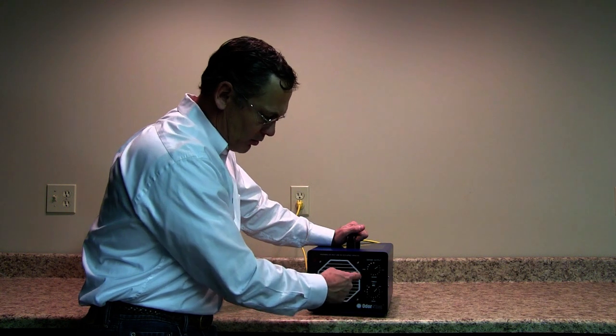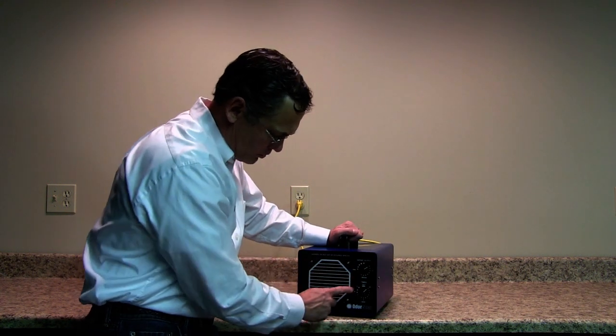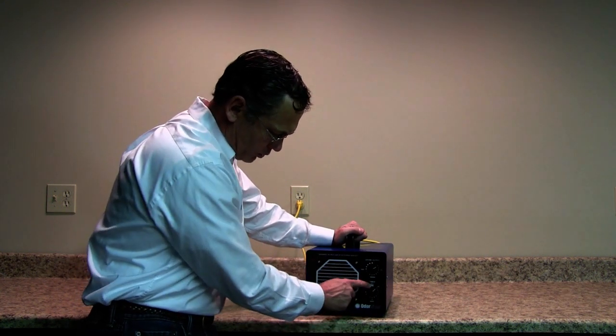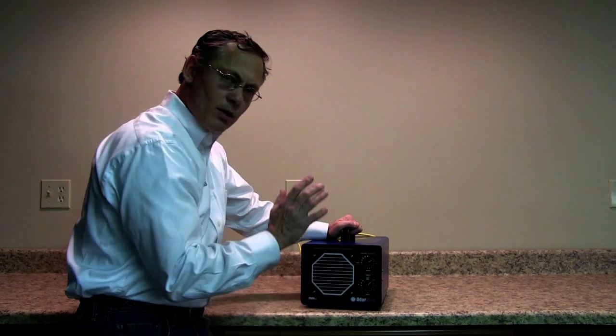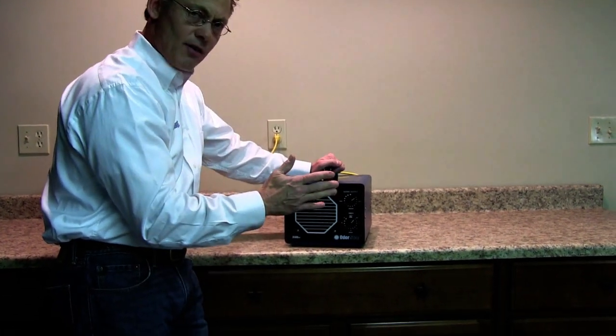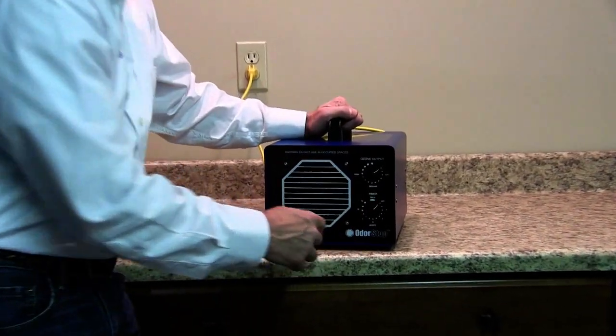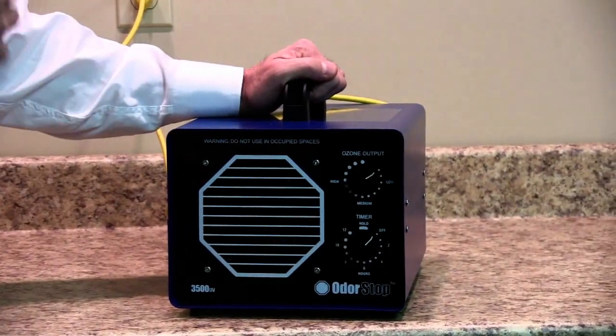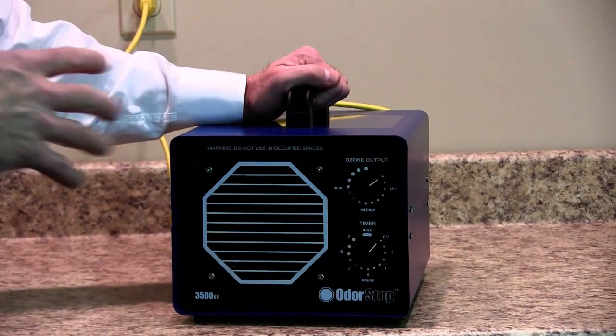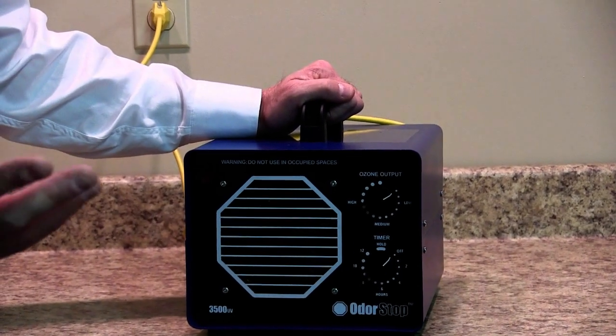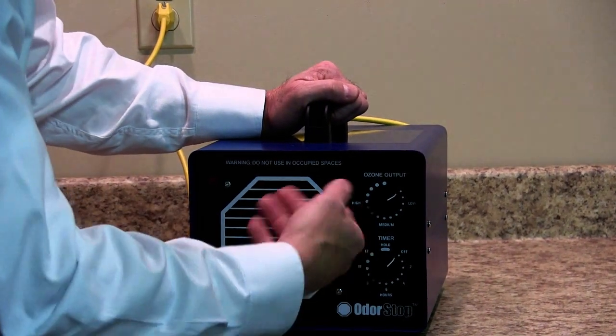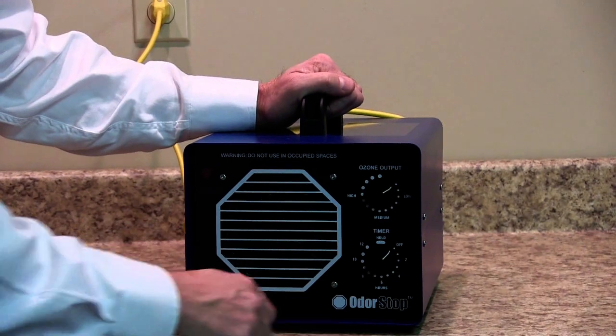So we have a variable ozone output and we also have a two position timer. In the hold option, what you get is it will stay on indefinitely. If you want to sanitize an area and you're leaving your house for 12 hours, you want to sanitize it for 8 hours so a lot of the ozone smell would be dissipated, then you can set it on 8 hours and it will count down and it will shut off.